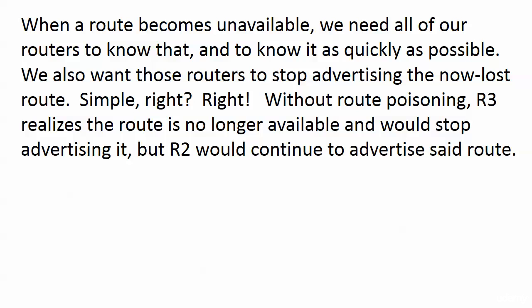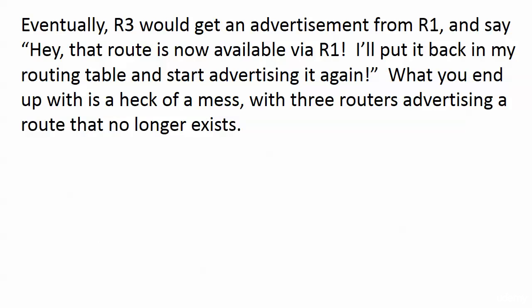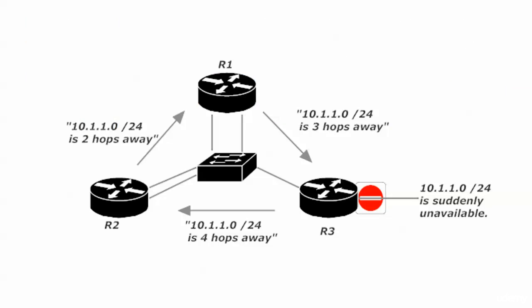What I'm showing you next is without route poisoning. Router 3 says 10.1.1.0/24 is unavailable and stops advertising it. But router 2 will keep telling everybody — including router 1 — that it knows where 10.1.1.0/24 is and it's two hops away, even though the network is now unavailable. It's not enough for router 3 to just stop advertising; it has to tell everyone that route is gone. Without route poisoning, router 3 would get an advertisement from router 1 saying the route is available via router 1, and router 3 would put it back in its routing table and start advertising it again.